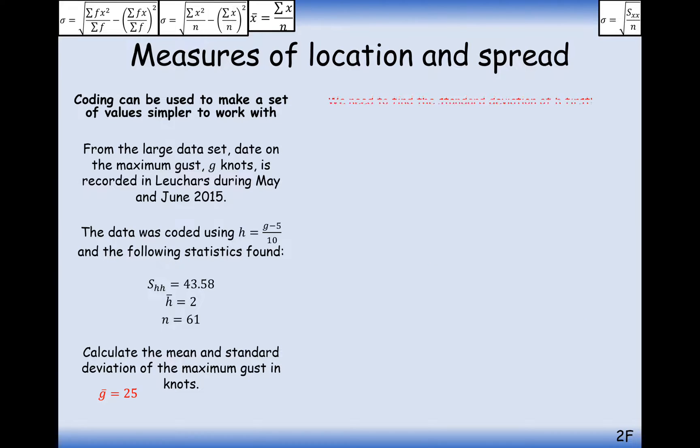The standard deviation is going to be a little bit different. We need the standard deviation first. So pull out the formula. So it's going to be SHH divided by N, well, the sum of the differences of the H values squared, and then do 1 divided by the other. So we've got 61 here, and then calculate that and we get 0.845. So that's our standard deviation of the H values.